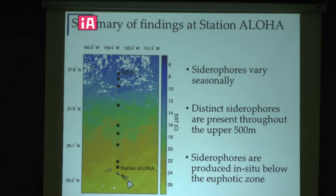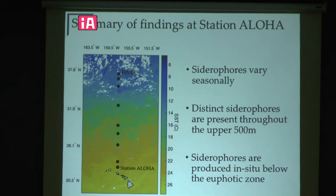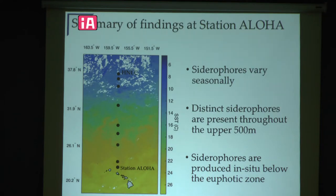To summarize what we've seen at Station ALOHA: we're starting to see some interesting patterns. We've seen some seasonality in the siderophores. There seems to be a depth zonation of different compounds, which could mean they have different functionalities or are produced by different bacteria. It was very interesting to see that siderophores are produced in situ, apparently below the euphotic zone.